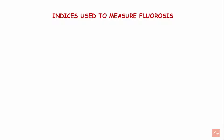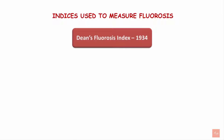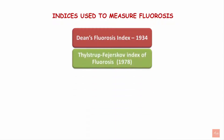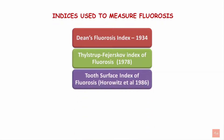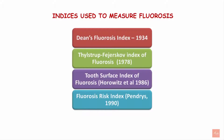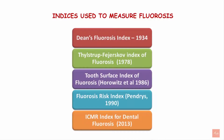First, let us see what indices are used to measure dental fluorosis. We have Dean's fluorosis index, introduced in 1934 and modified in 1942. Then the Thilstrup-Fizesco index of fluorosis introduced in 1978, the tooth surface index of fluorosis introduced in 1986, the fluorosis risk index introduced in 1990, and the Indian ICMR index for dental fluorosis introduced in 2013.